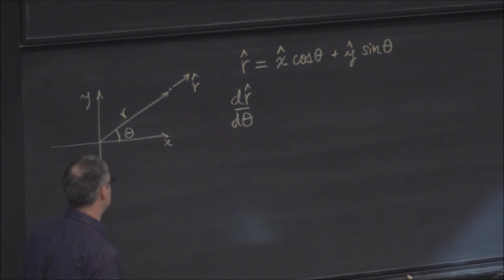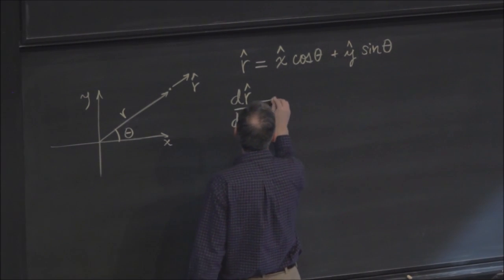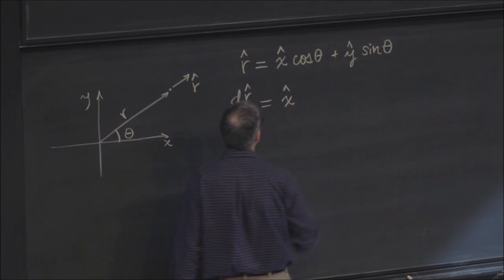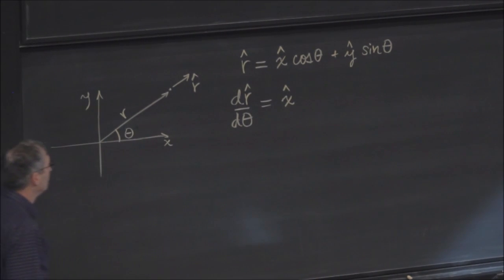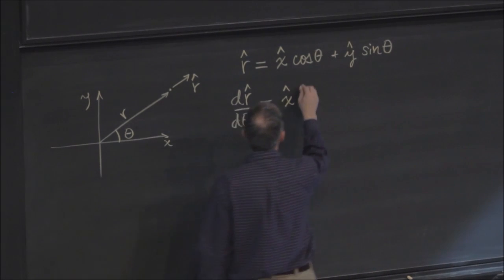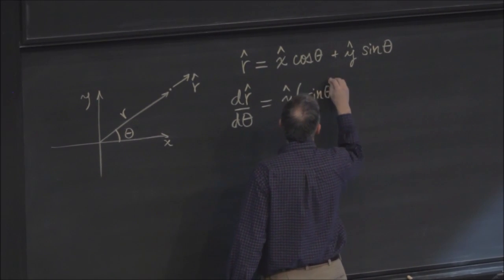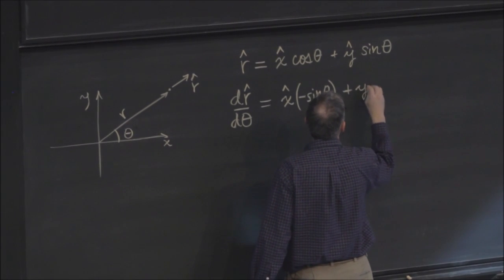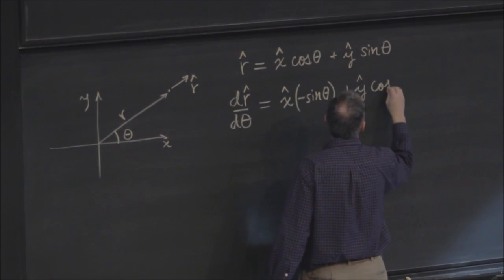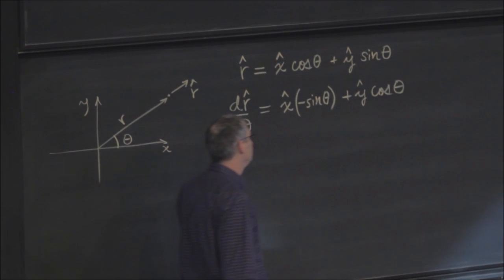But that's not so tough. So the Cartesian unit vectors don't move. That's still x hat, that's a constant. But the derivative of cosine is minus sine, and the derivative of sine is cosine theta.